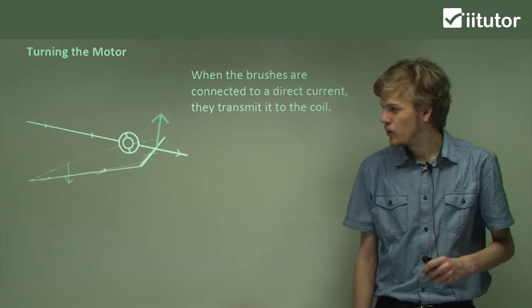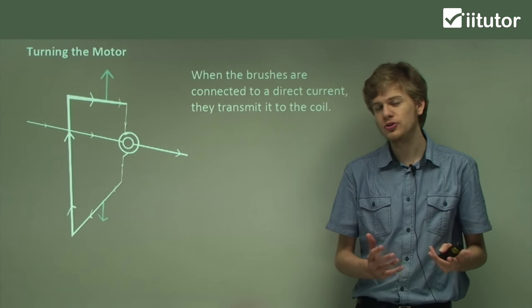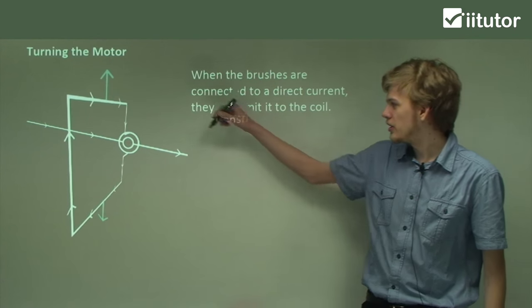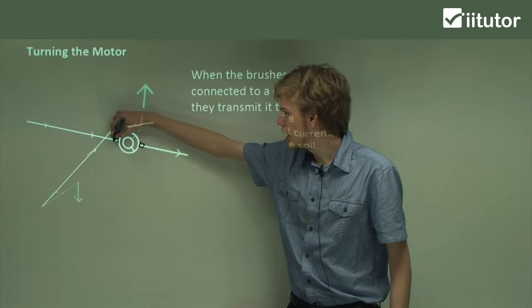Here we have an animation of what happens when we run a direct current across an armature using a set of brushes. In this case, the brushes will be connecting the external current to the split ring commutator at this point and at this point.